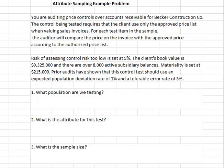This is an attribute sampling example problem. There's a document in D2L that accompanies this problem that you may want to print out.